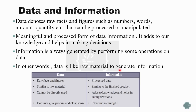Let's check the differences. Data is raw facts and figures; information is processed data. Data is similar to raw material; information is similar to a finished product — we use raw material to make a finished product. Information is processed data; data cannot be directly used as information.